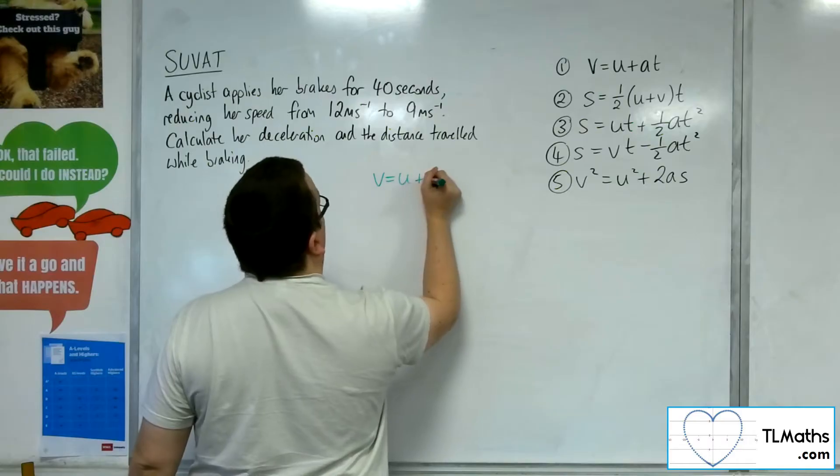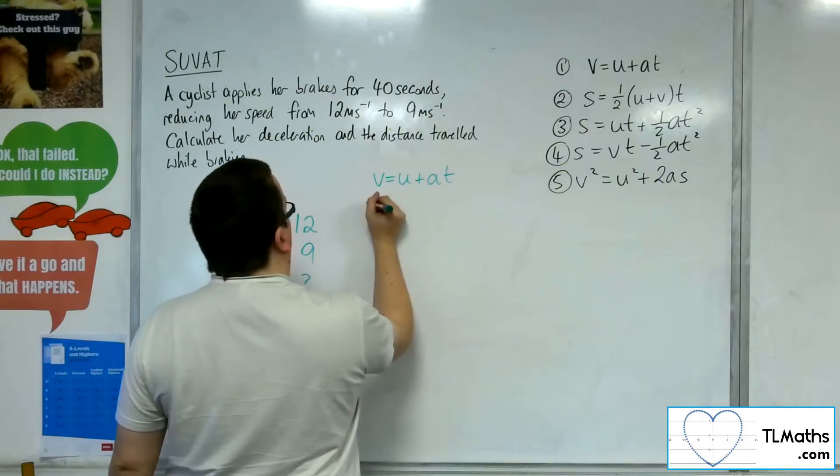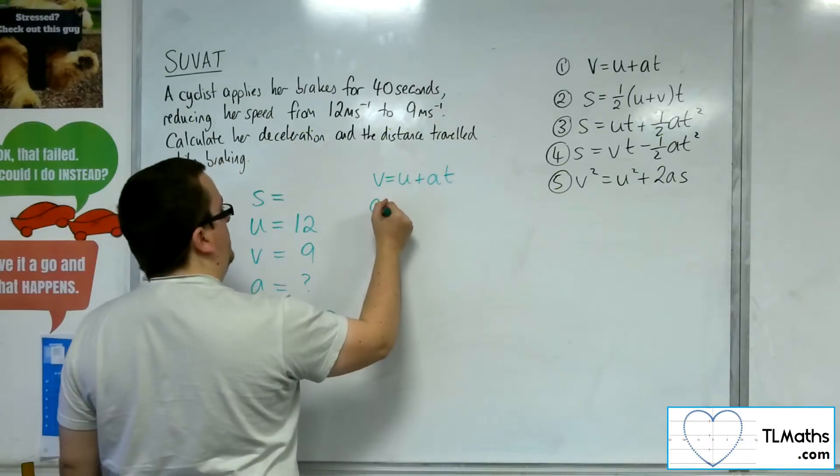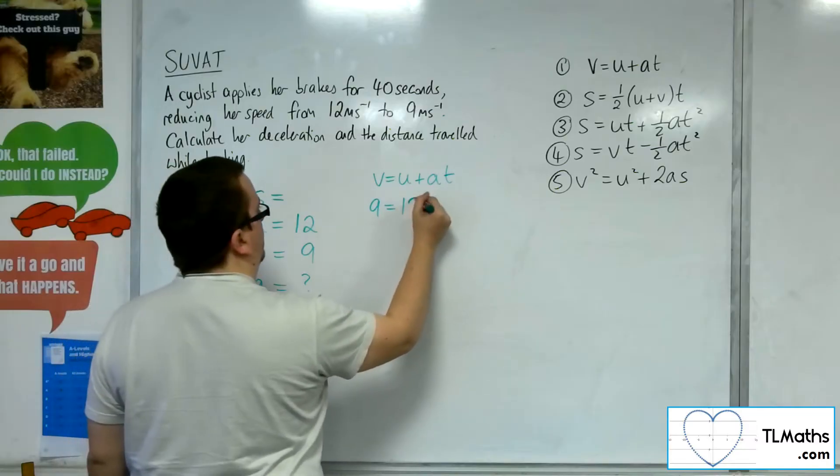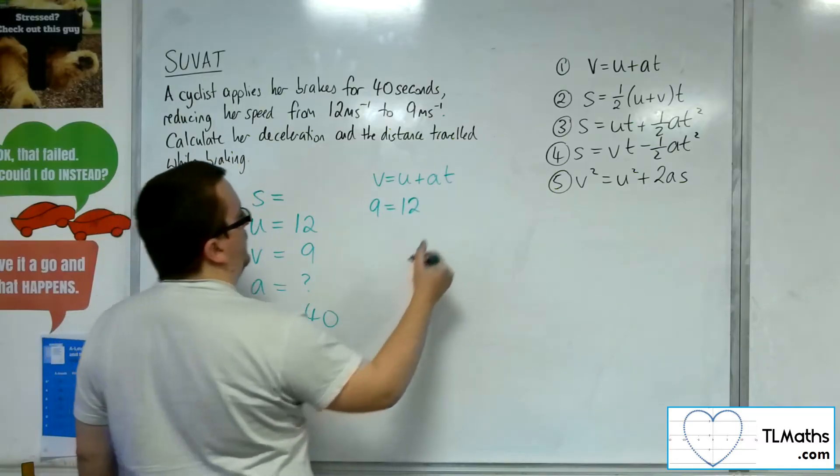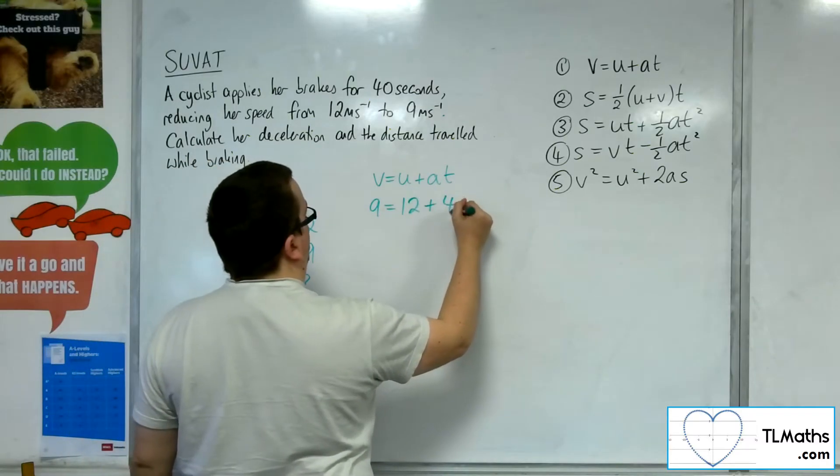So V equals U plus AT. So we've got the V, which is 9. We've got the U, which is 12. We don't know A, but we know the time is 40. So 40A.